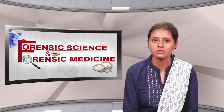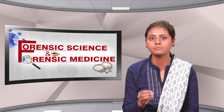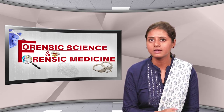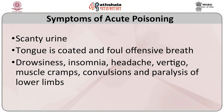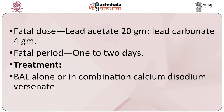Acute poisoning occurs mainly due to lead acetate. Symptoms start immediately and include metallic taste and burning sensation in the mouth, dryness of throat, intense thirst, vomiting, colicky pain at intervals relieved by pressure, constipation, scanty urine, coated tongue, foul breath, drowsiness, insomnia, headache, vertigo, muscle cramps, convulsions, and paralysis of the lower limbs.